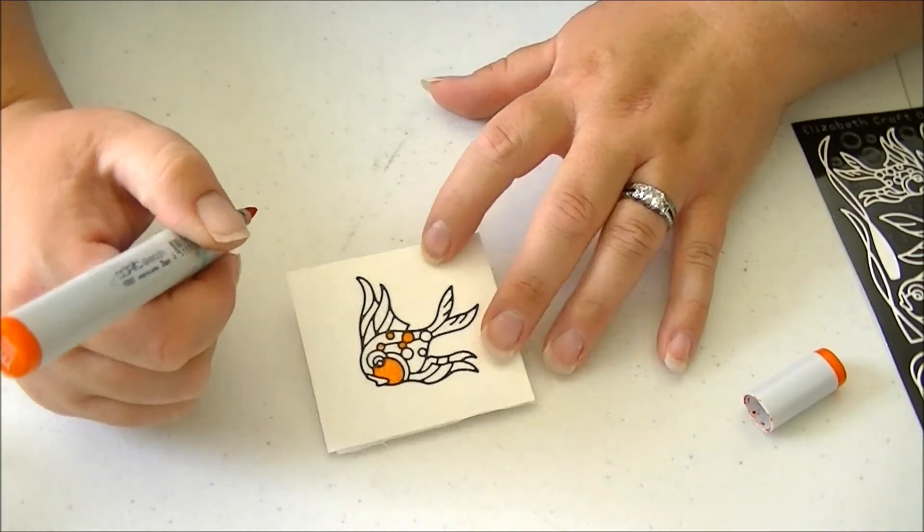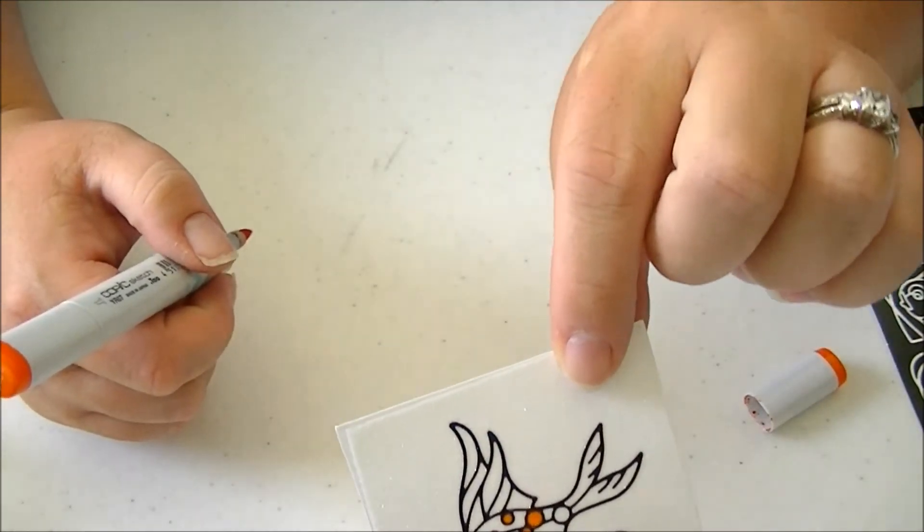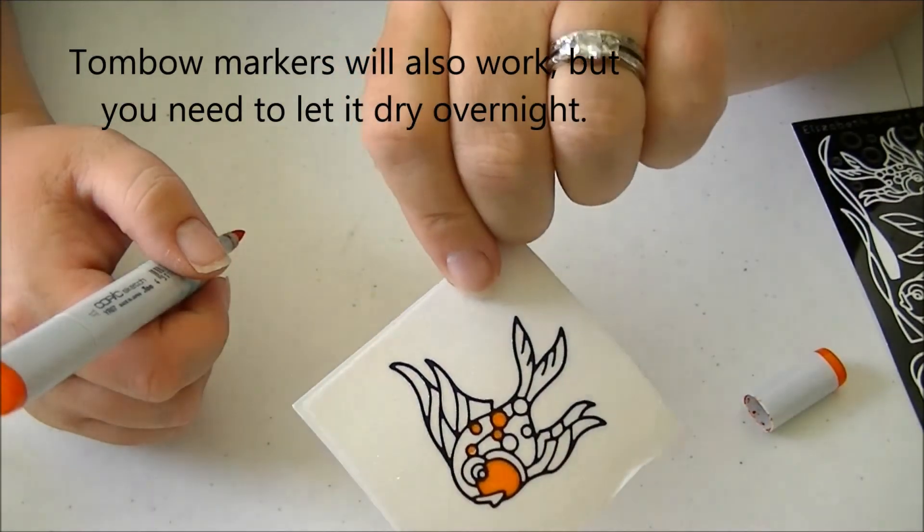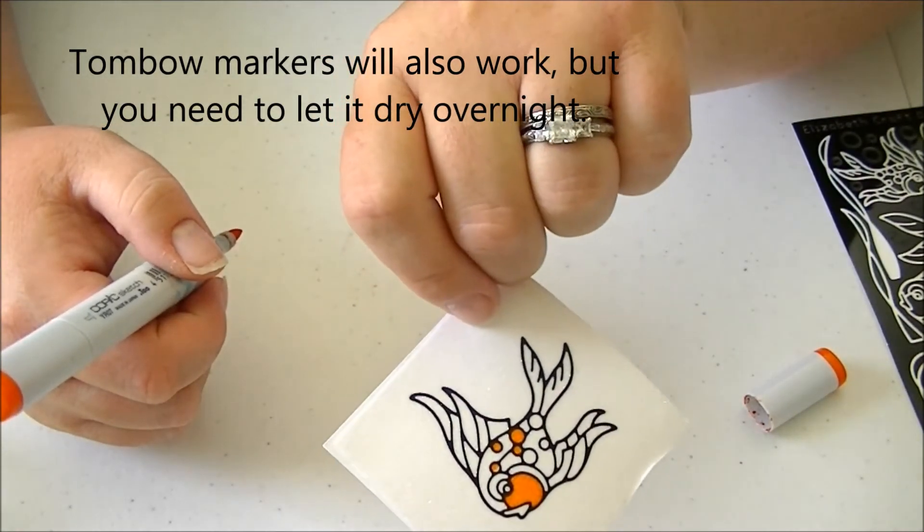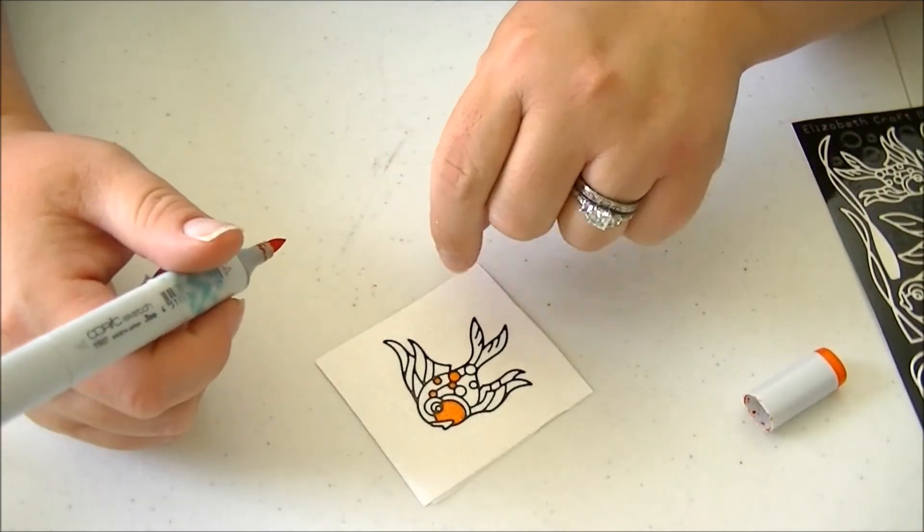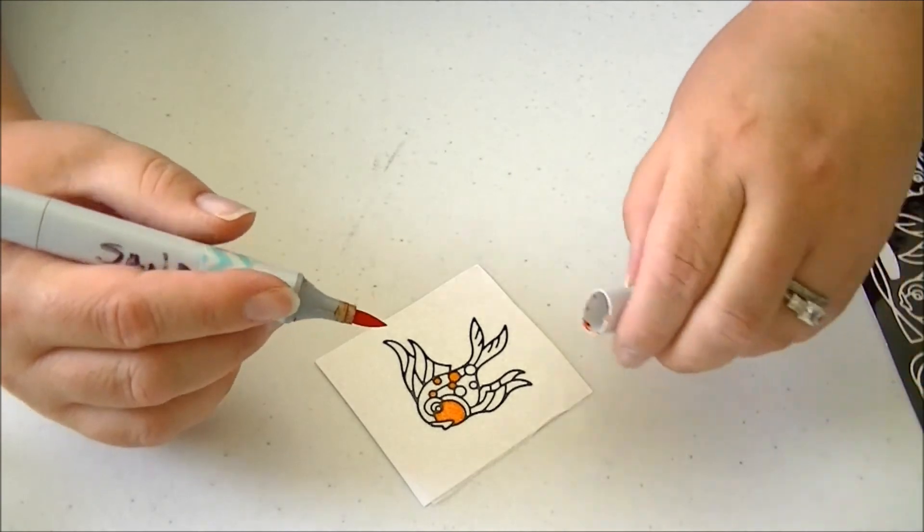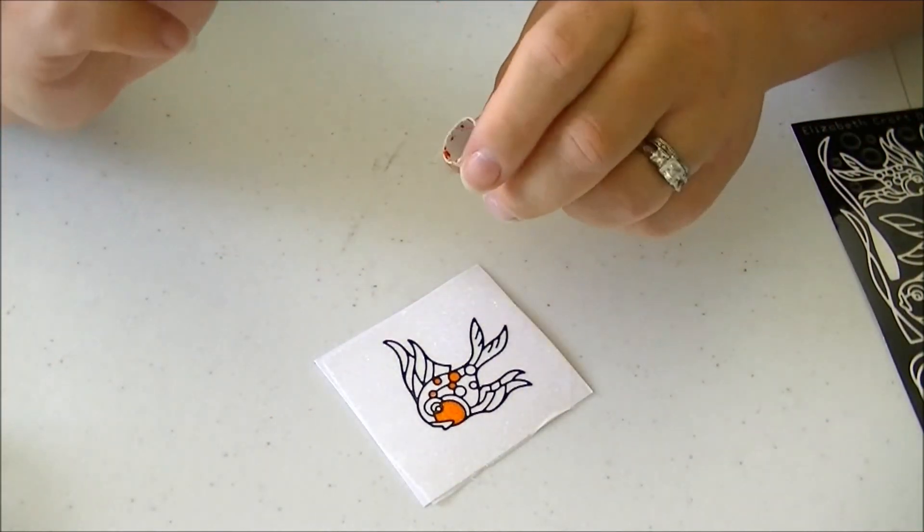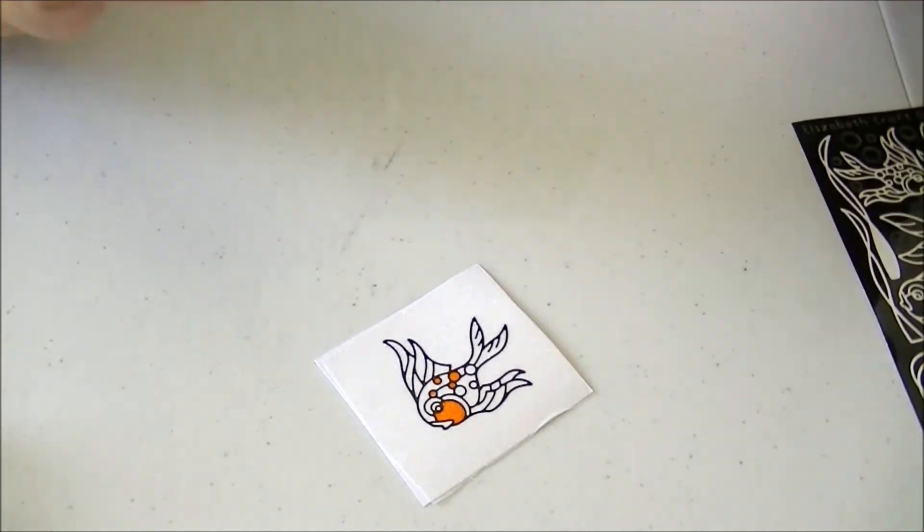Once you're done coloring, you can cut this out and place it on your card, scrapbook page, or whatever project you're working on. Remember, this is the only glitter I know of on the market that you can color on without ruining your pens. You have to polish it—if you don't polish it enough, you will get glitter on your nibs. Thanks for watching.